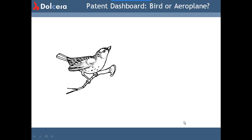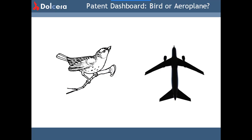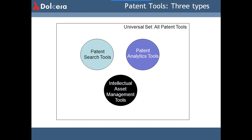What is the Dolchera Patent Dashboard and how does it fit into the constellation of other patent products? There are three types of patent softwares that have been made available to IP professionals over the years.